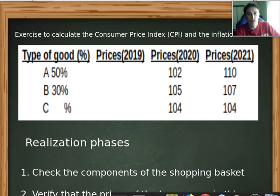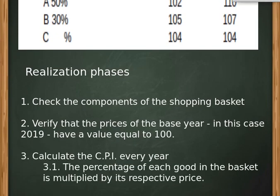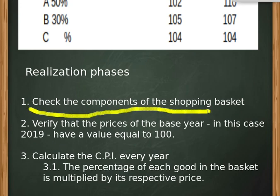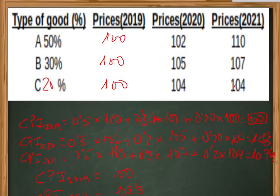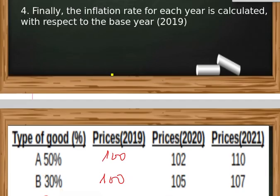When we have an SSI like this, we have to go through several phases. First of all, we have to check the components of the shopping basket. In this case, good C is 20%.